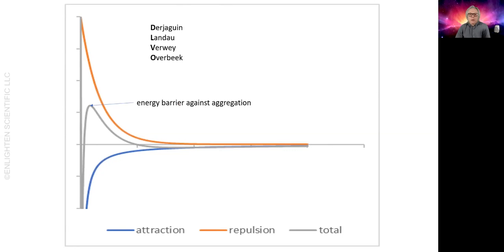According to the DLVO theory, you can add the inherent attractive potential energy, shown in blue, and the repulsive potential energy, in orange, to get the overall interaction energy, shown in grey. Here, there is an energy barrier that prevents aggregation.